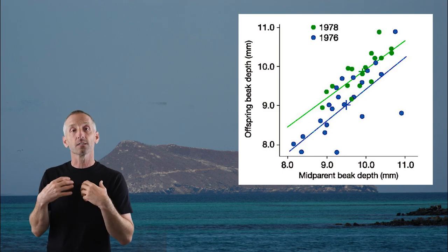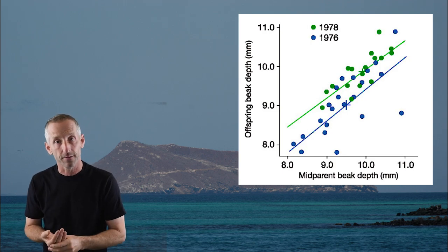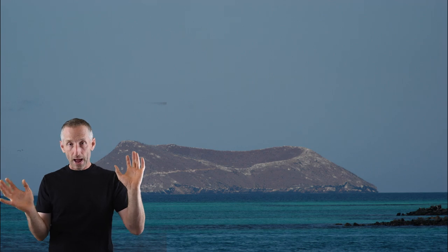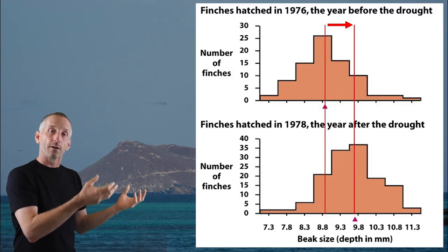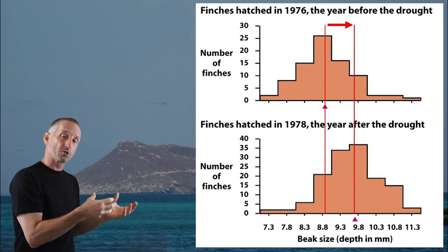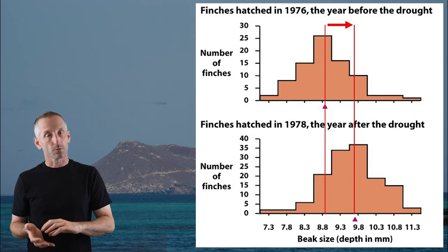The larger-beaked birds were surviving, and by looking at parents and offspring, they knew that beak size is highly heritable. When the rains came back and a new generation of finches was produced, that new generation had a larger average beak size than the ones before. They had witnessed natural selection — not just as a process that shaped the diversity of life over many years, but happening right before their eyes.